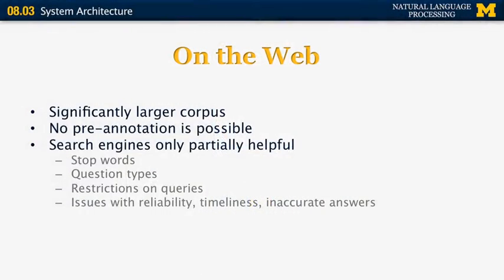Search engines are not necessarily useful all the time. For example, they may remove stop words, or disregard question types — if the question is 'who wrote Hamlet,' the word 'who' is treated as a stop word rather than being translated into a person-name constraint. Search engines also impose arbitrary restrictions on queries, such as limiting query length. Researchers must also deal with issues of reliability, timeliness (not returning answers that were accurate a year ago but are no longer correct), and the presence of inaccurate answers that can appear on the web for many different reasons.